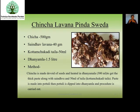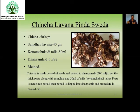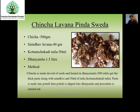First use seedless Chincha — if seeds are present remove them. Take a pan, add 50 ml Kottamchukkadi Taila, add Chincha and start frying, then add Lavana and fry, then add a little Dhanayamla, boil it, take out, and make Potalis. Take 1 litre Dhanayamla heated, and use the dipping method — dipping the Potali in heated Dhanayamla and applying to the body.